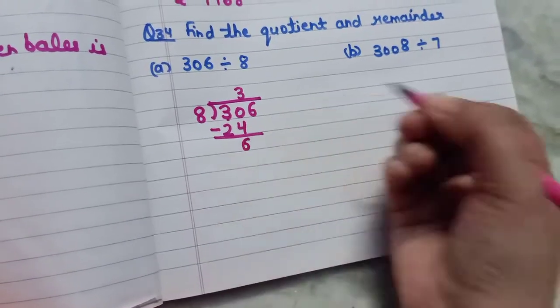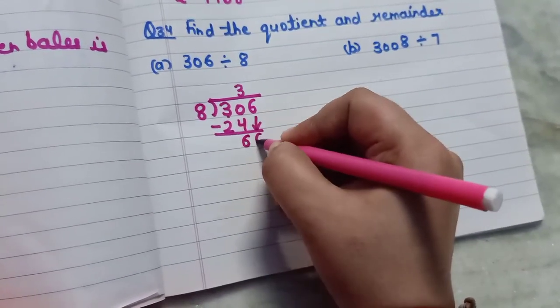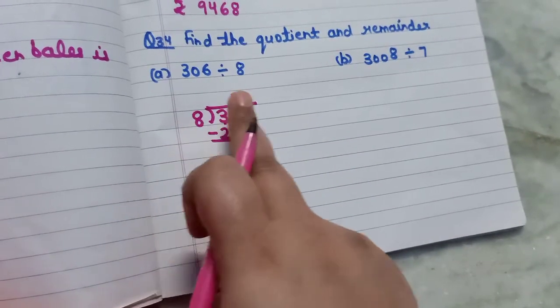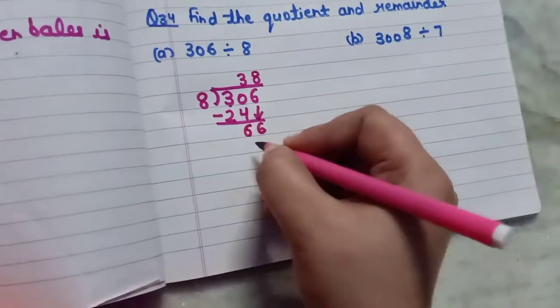So you will write 6. Now what you will do? You will just copy down the next digit that is 6. Again just check 8 table. 8 eights are 64, so you will be writing 8 eights are 64.